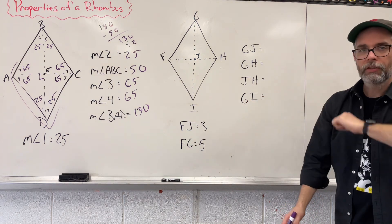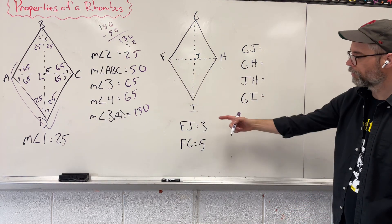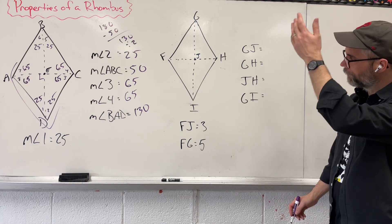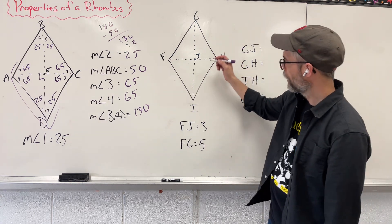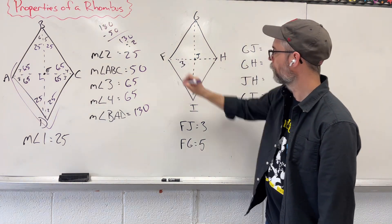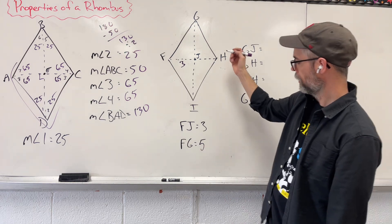What about lengths of sides and diagonals and all that stuff? So let's try it again. So FJ. Let's label what we know and let's fill in everything else. FJ. Here in the middle is going to give us 3. FG is 5.